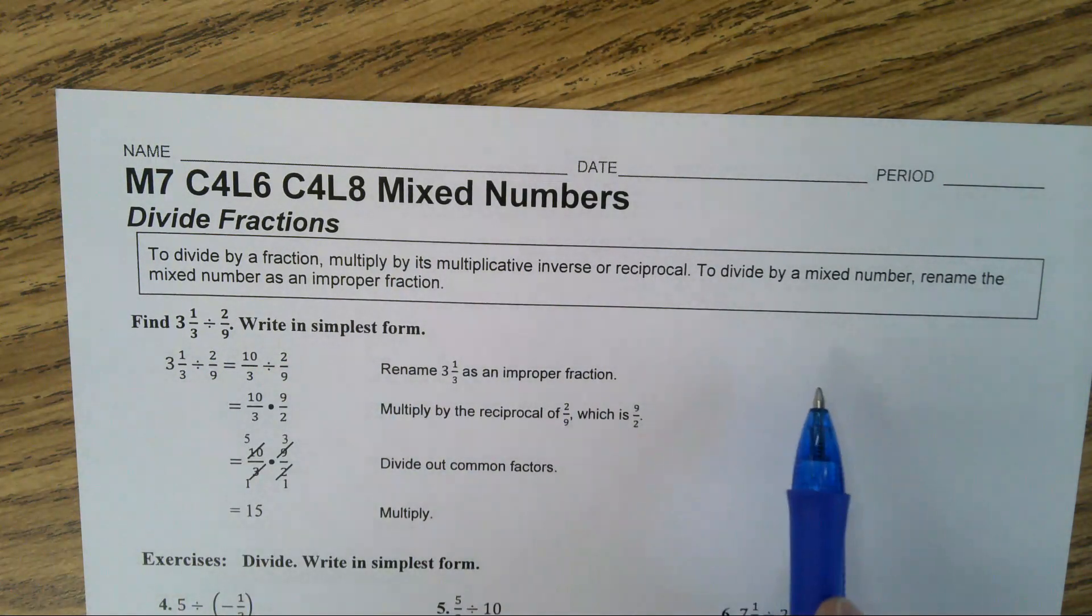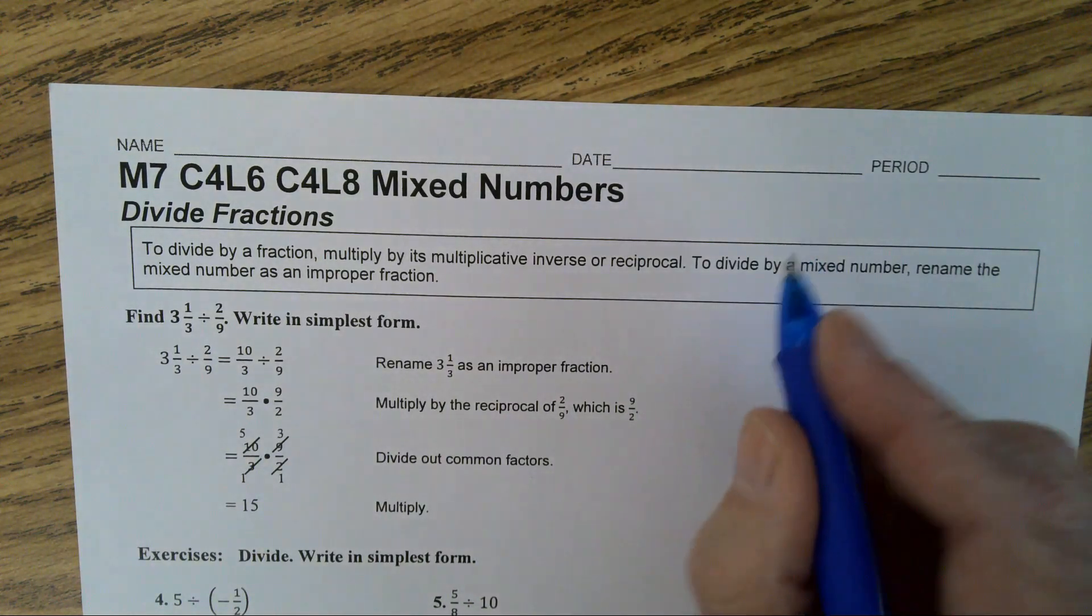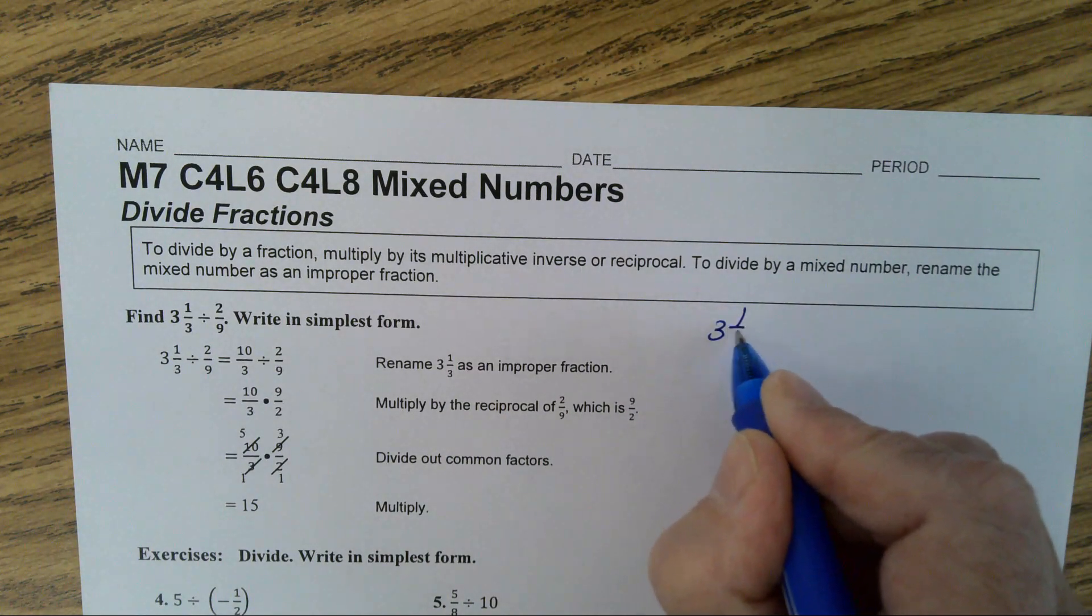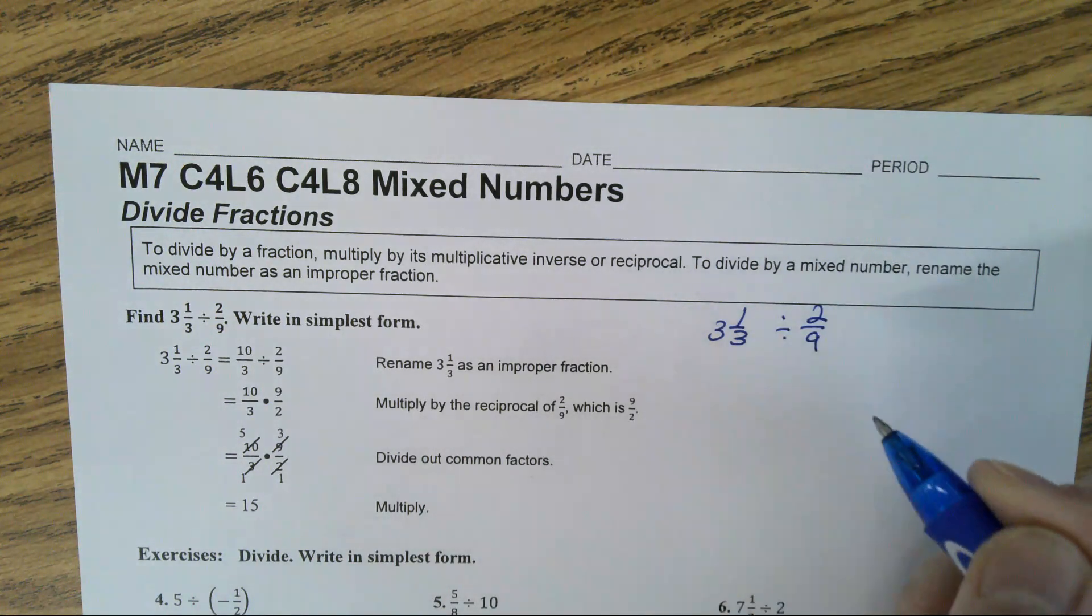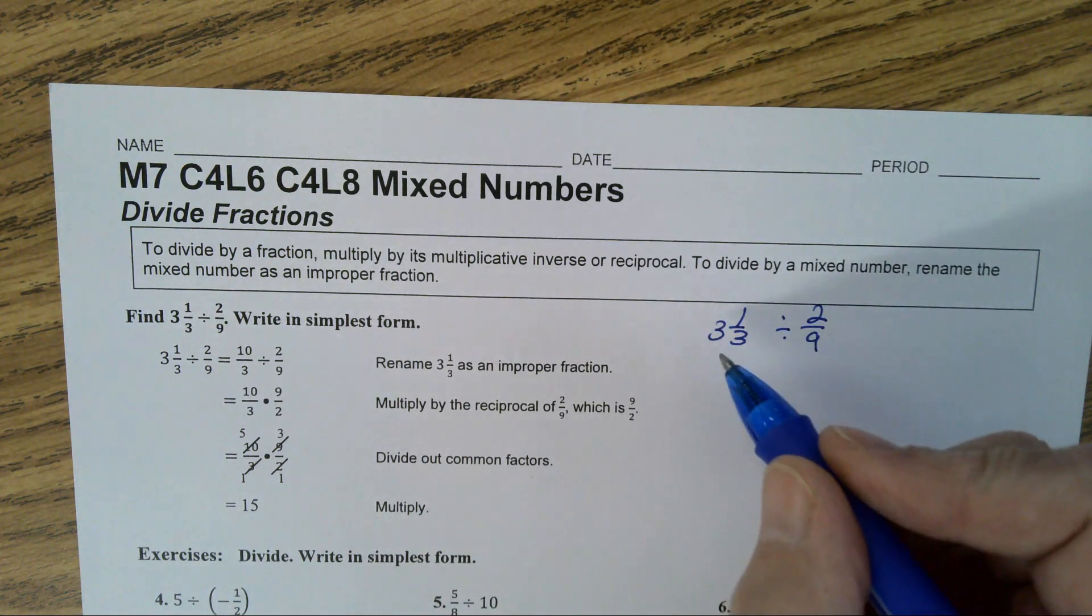We're going to rewrite it over here to the side. So you have 3 and 1 third divided by 2 ninths. Class, you're going to change this to an improper fraction.